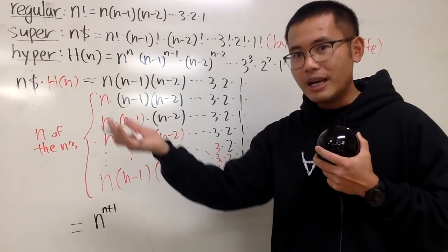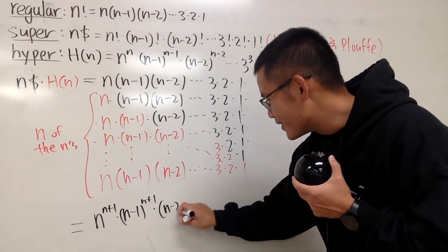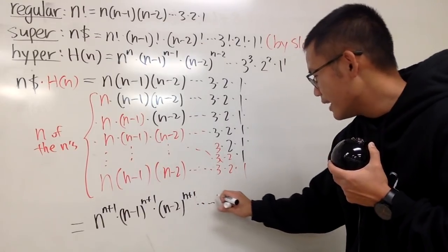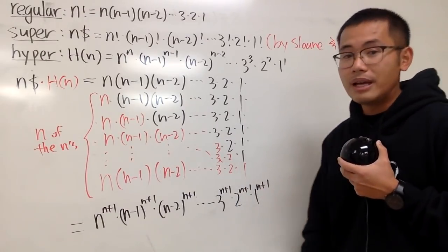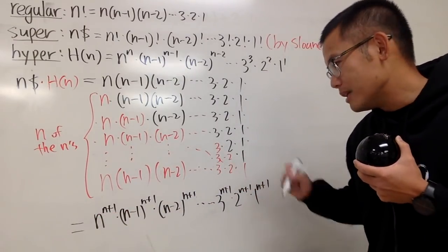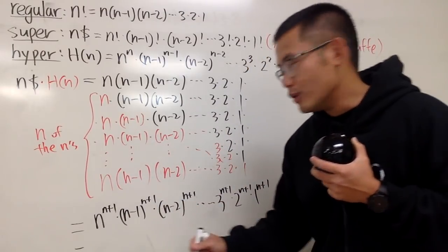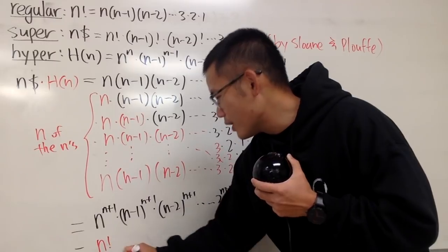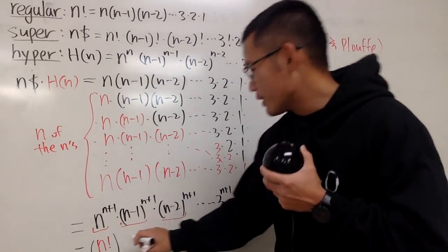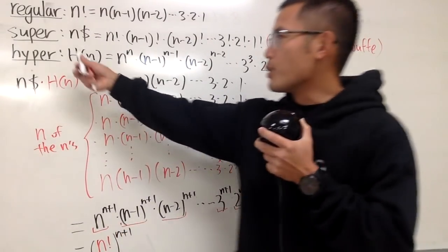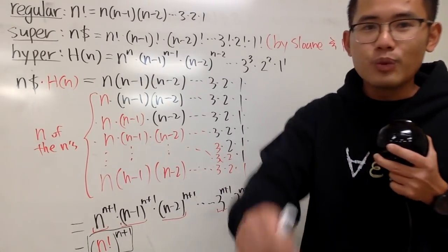Similarly, from the n minus 1 column we get n minus 1 to the n plus 1 power, and n minus 2 raised to the n plus 1 power, and so on down to 3 to the n plus 1, then 2 to the n plus 1, and 1 to the n plus 1. Everybody has the same power, namely n plus 1, so we can factor it out. If you put everything inside parentheses, n times n minus 1 times dot dot dot times 2 times 1 is just n factorial. So when you multiply the super factorial and the hyperfactorial, you end up with n factorial raised to the n plus 1 power.